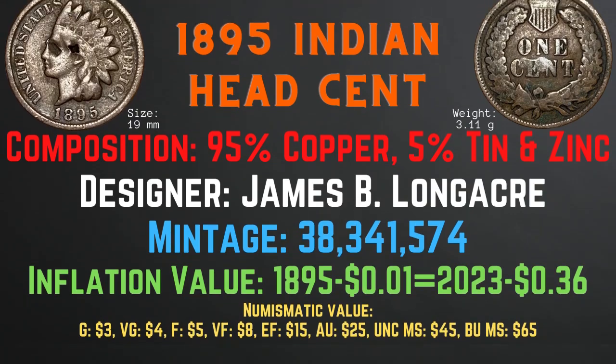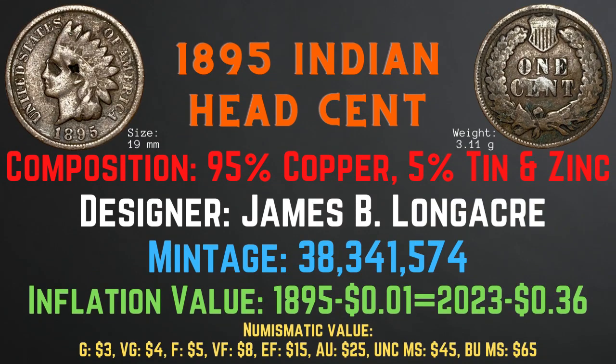Now let's take a look at the 1895 Indian Head cent. It has a size of 19 millimeters and a weight of 3.11 grams. Its composition is 95% copper and 5% tin and zinc. Its designer was James B. Longacre. Its mintage is 38,341,574. Its inflationary value for the year 1895 is 36 cents. The numismatic values range from $3 in good condition to $65 in brilliant uncirculated mint state condition.